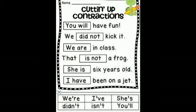Here is how contractions are used: 'You will have fun' becomes 'you'll' — you plus apostrophe double-l. 'We did not keep it' becomes 'we didn't' — did plus apostrophe t. 'We are in class' becomes 'we're' — apostrophe re. 'That is not a frog' becomes 'isn't'. 'She is six years old' becomes 'she's'. 'I have been on a jet' — 'have' becomes apostrophe ve.